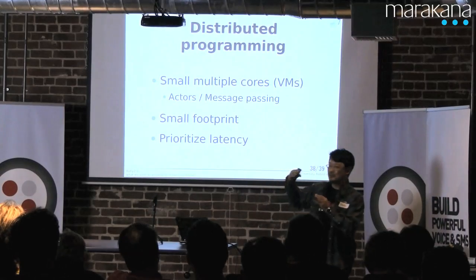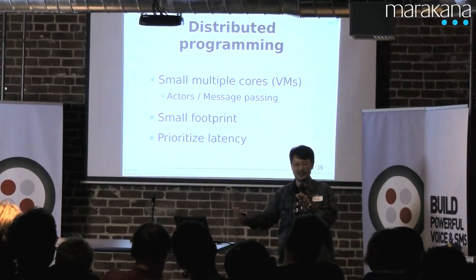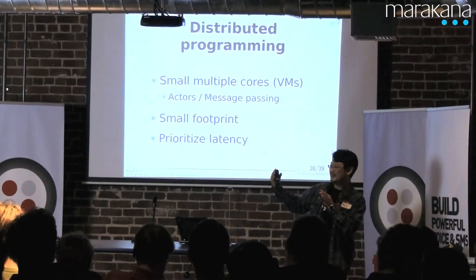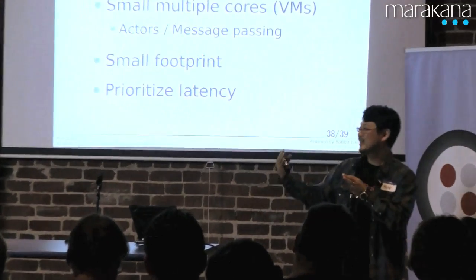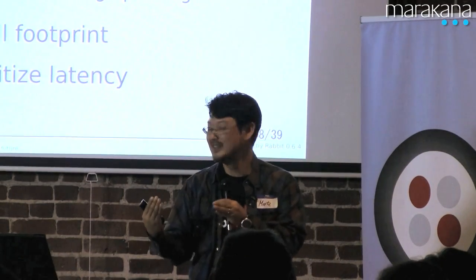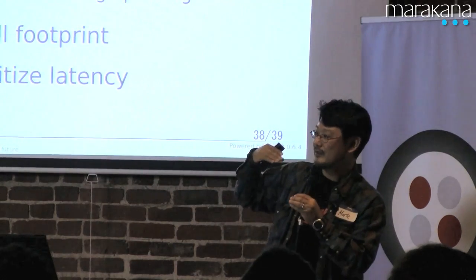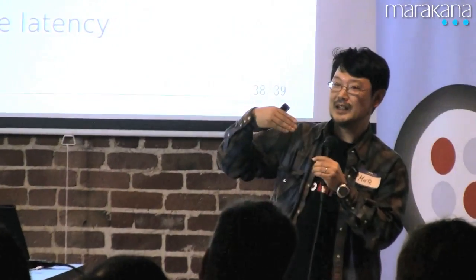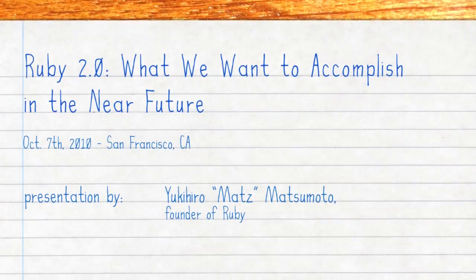So, Ruby 2.0 has software and language features like I described — to address the scalability of software and development teams. For implementations, we will make Ruby better and faster. At the same time, we'd like to develop a new lightweight Ruby — mruby — which is suitable for small devices or maybe cloud systems. By providing these technologies, we'd like to make the programmer's environment better, and make programmers feel joy in their daily programming. Thank you.